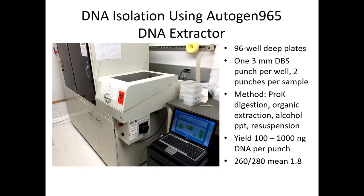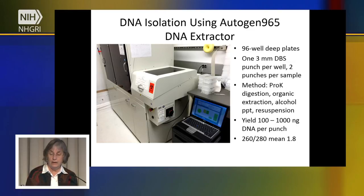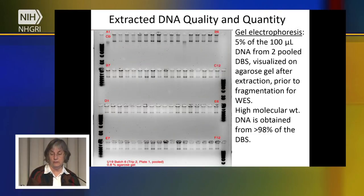How do we isolate our DNA? This is a picture of a large DNA robot called Autogen 965, which we use. It uses a 96-well deep plate in which a tiny punch, 3 millimeters in diameter, from the newborn blood spot is placed. The method involves digestion of proteins in this dry blood spot sample and then precipitation of the DNA. We actually find that we can isolate plenty of DNA this way to do a whole exome sequence — that is, to sequence all the genes in this sample of human DNA.